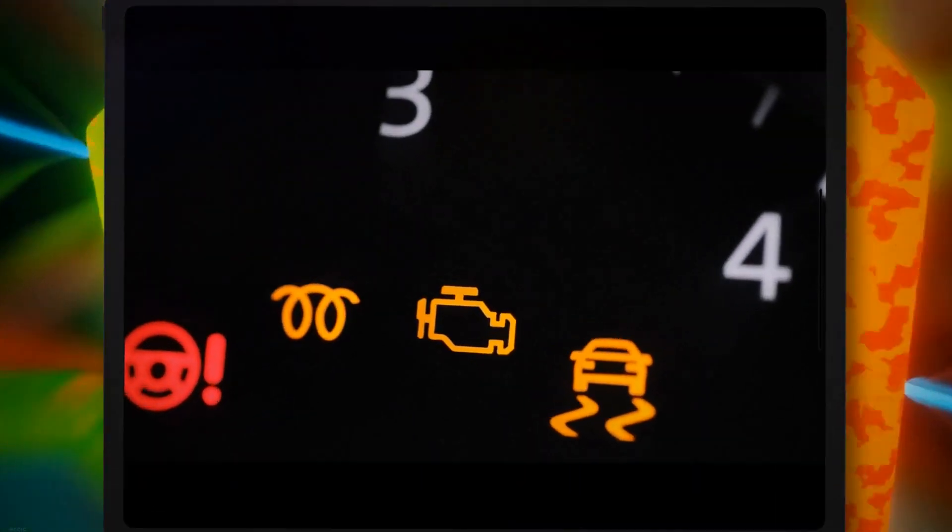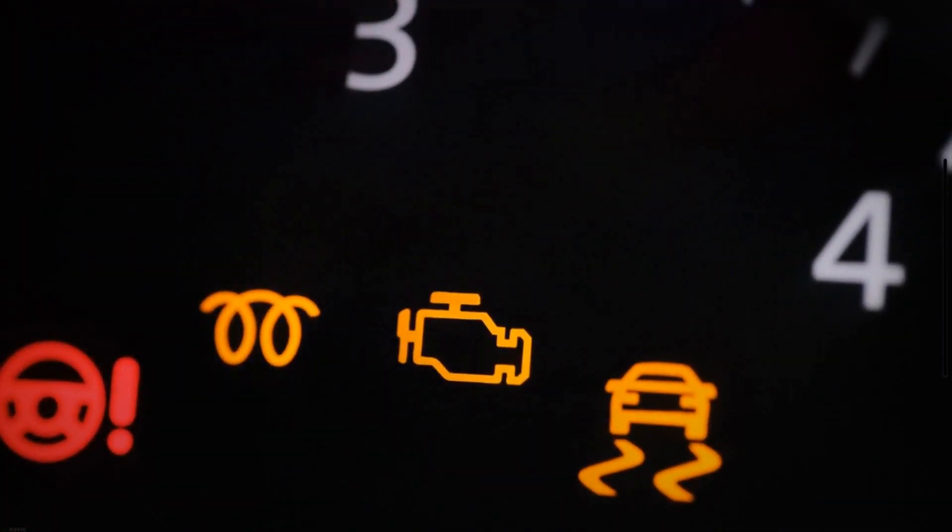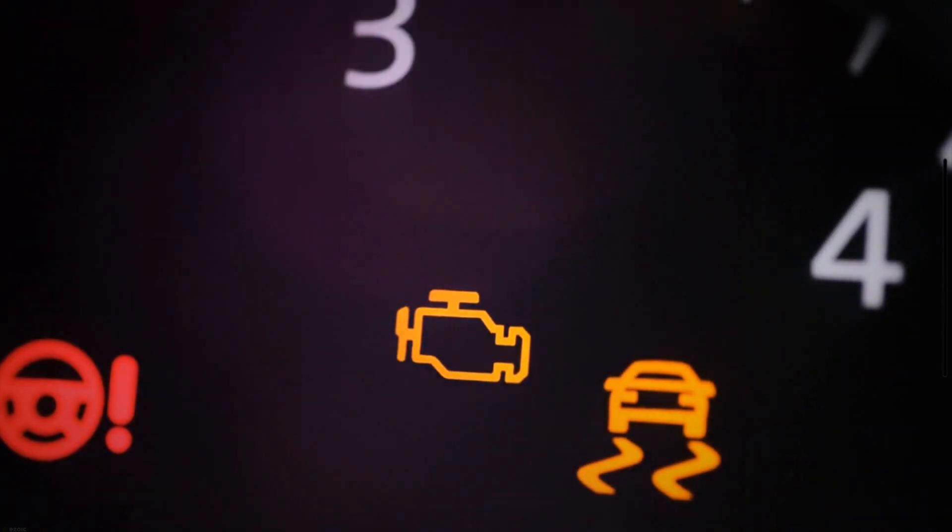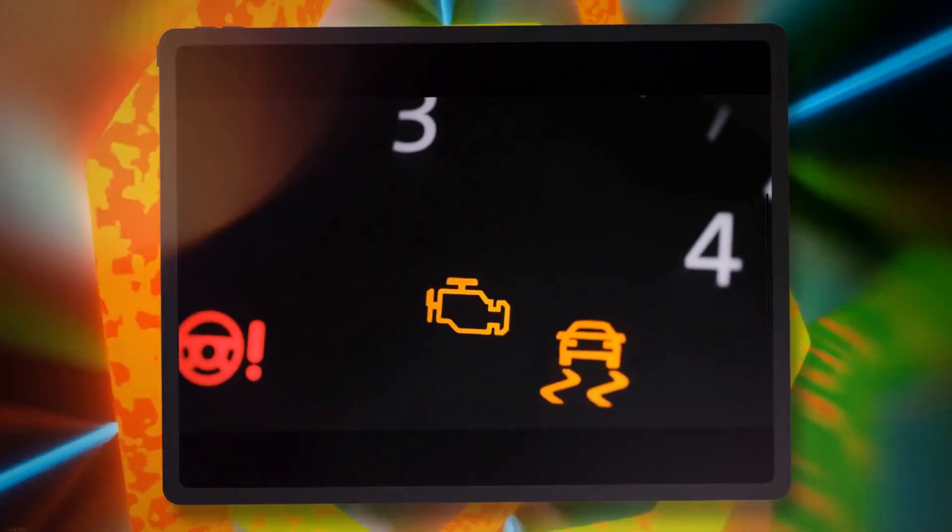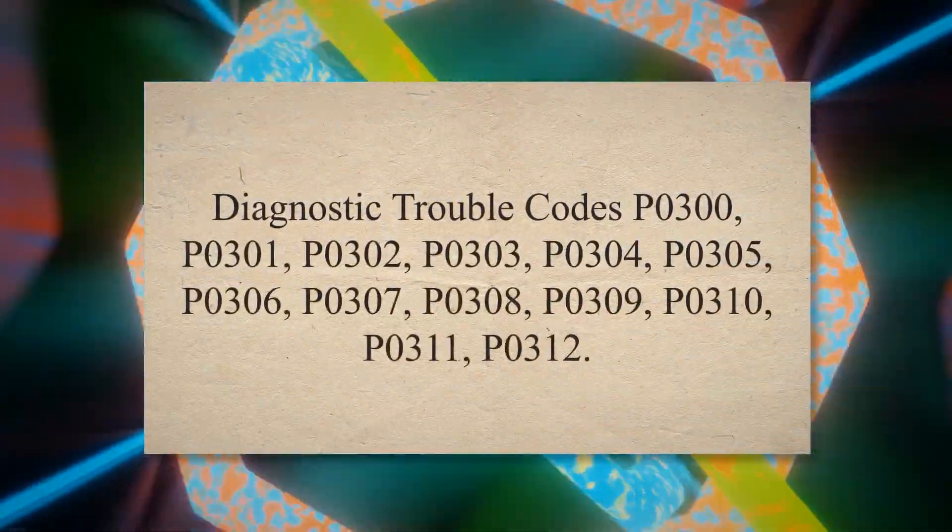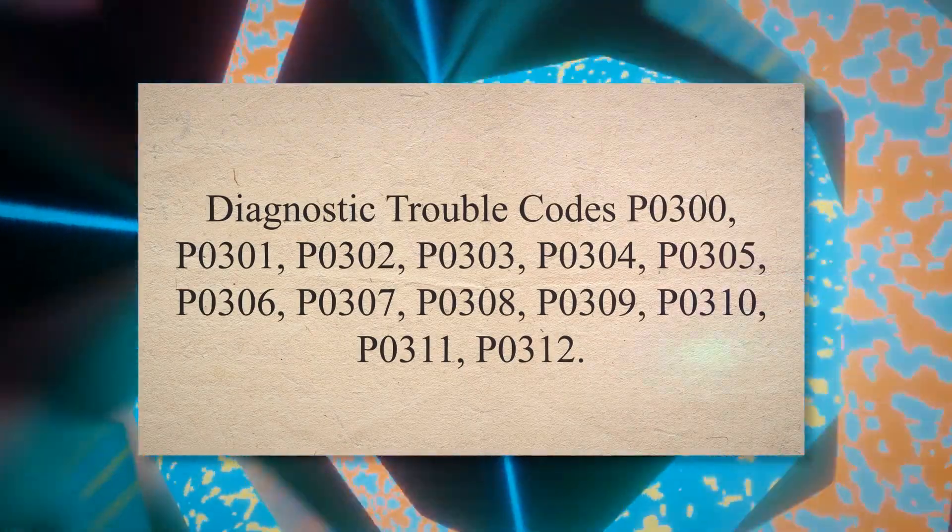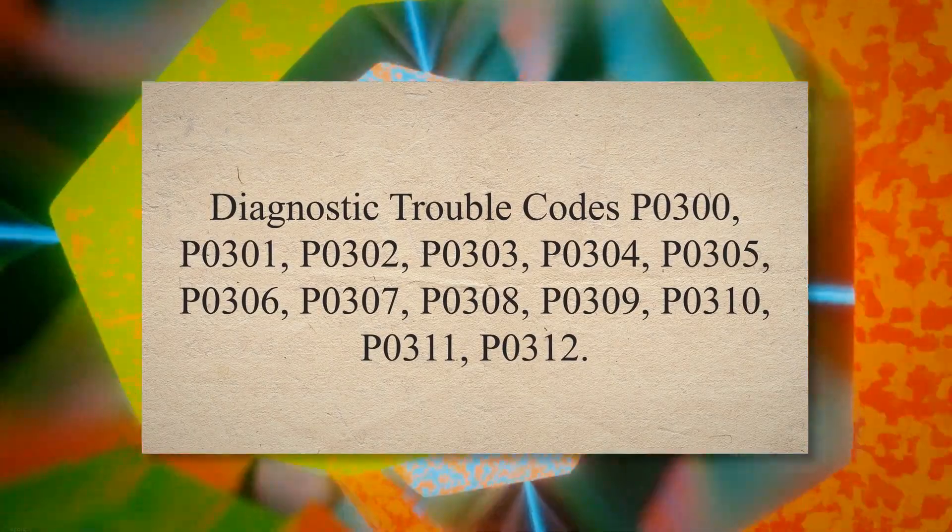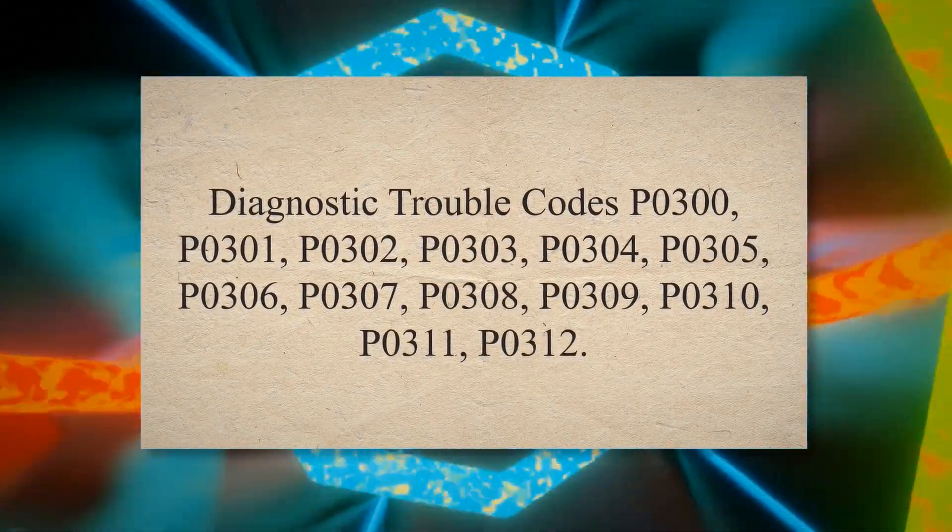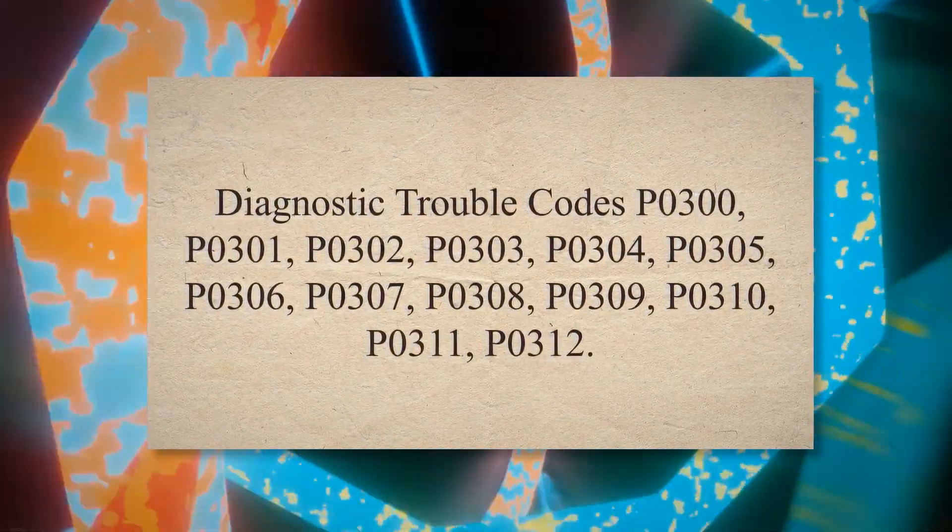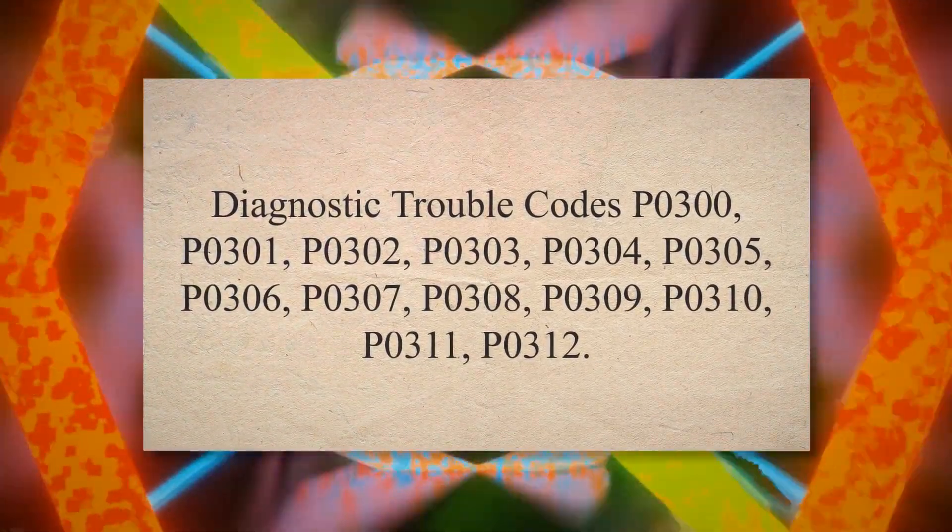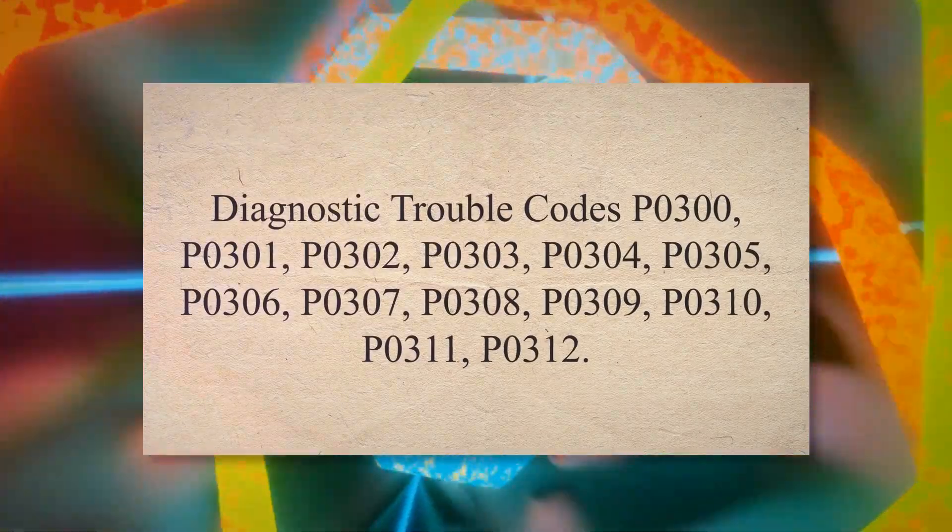The vehicle's computer monitors the ignition system performance. If it detects an issue, such as misfires or other ignition problems, it may turn on the check engine light. A diagnostic trouble code such as P0300, P0301, P0302, P0303, P0304, P0305, P0306, P0307, P0308, P0309, P0310, P0311, or P0312 will also be stored in the computer's memory.